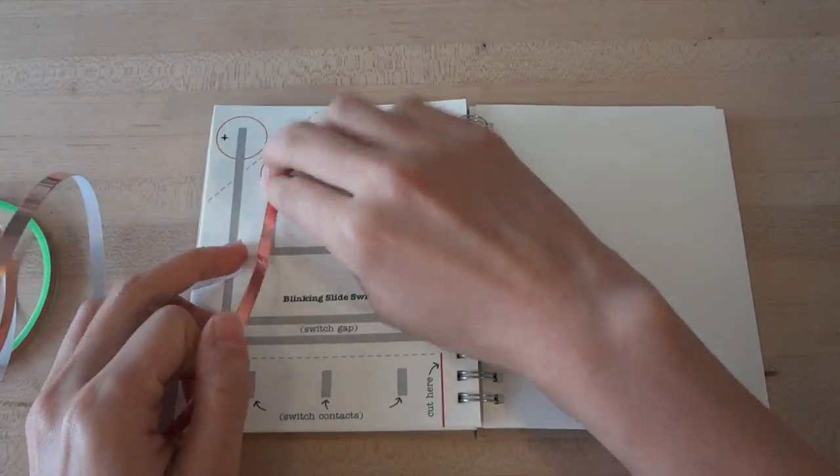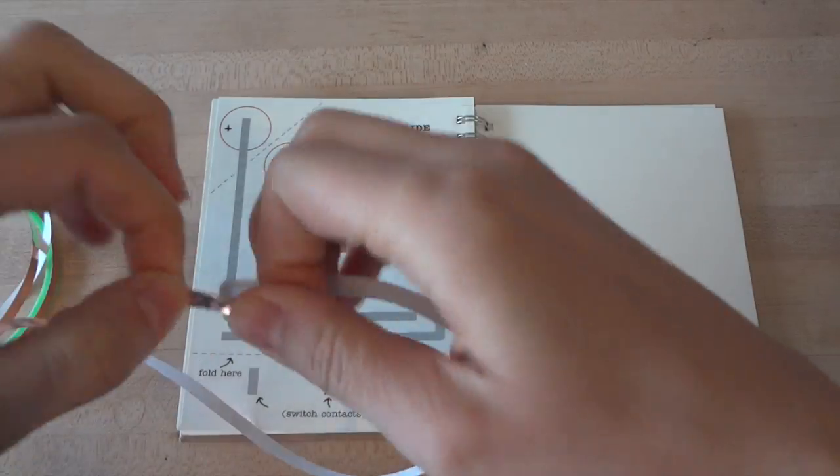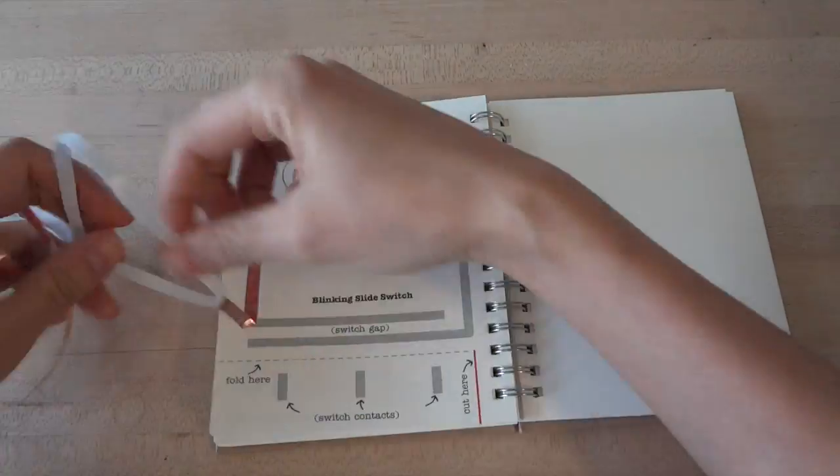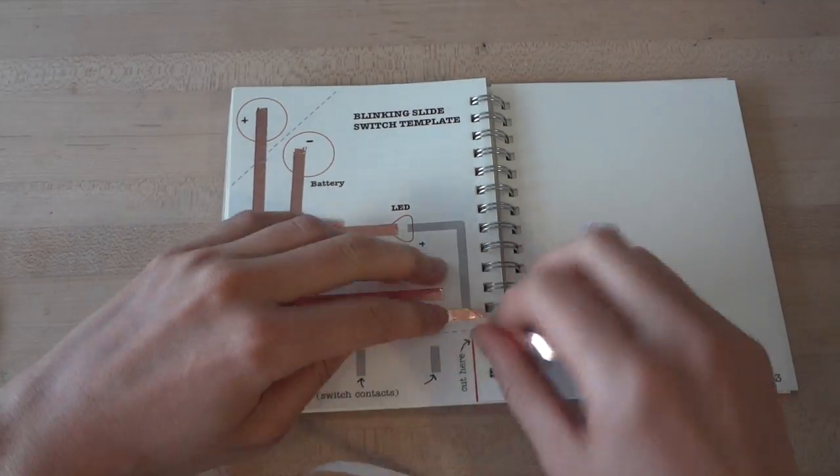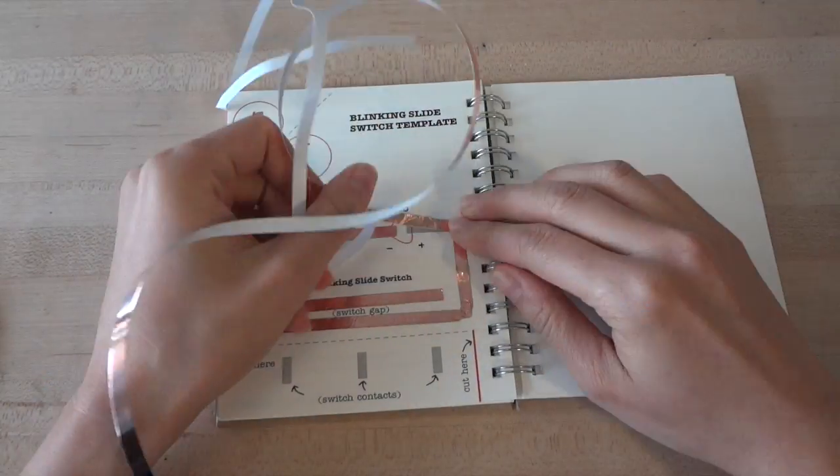First, stick your copper foil over the gray lines on the top of the template. Remember to use continuous pieces of foil for each gray line and to fold at the turns. Watch your fingers as the tape can be sharp.